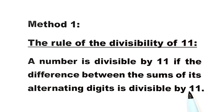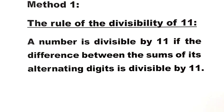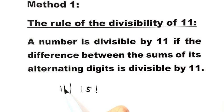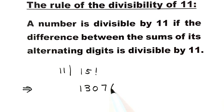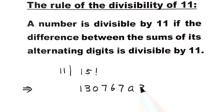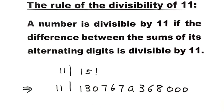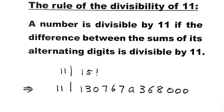Now let's see how to solve this question using this rule. Because 15 factorial is divisible by 11, this number 1 0 3 1 3 0 7 6 7 8 3 6 8 0 0 0 is also divisible by 11. Based on the rule, let's find the difference between the sums of its alternating digits.